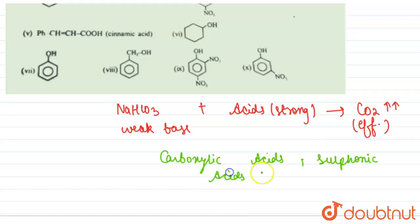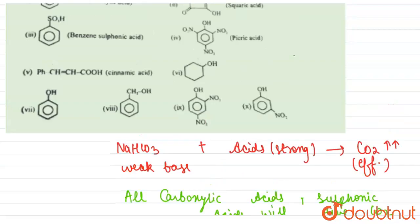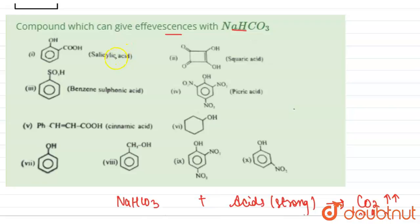All carboxylic acids and sulfonic acids will give CO₂. So first we will find which of the following have carboxylic group and which have sulfonic group. The first will give it, it has a carboxylic group. Third will also give it, it has a sulfonic group. Fifth will also give it, it has a carboxylic group.